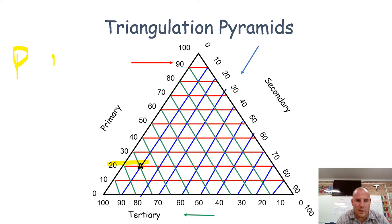The secondary is 10 because we look at the blue line going to A. Then my tertiary is 70. So what you can see is that they all add up to a hundred, so I know I'm right.